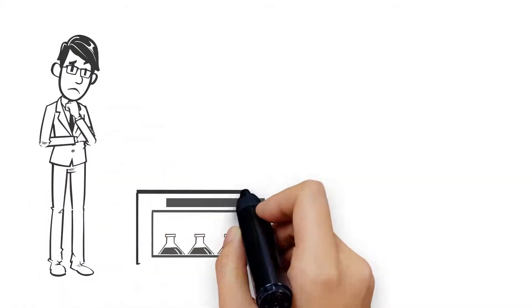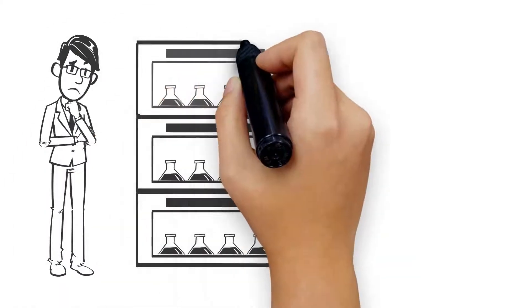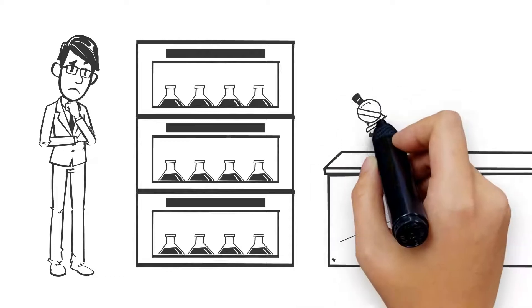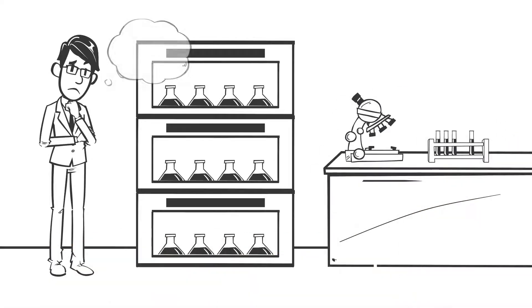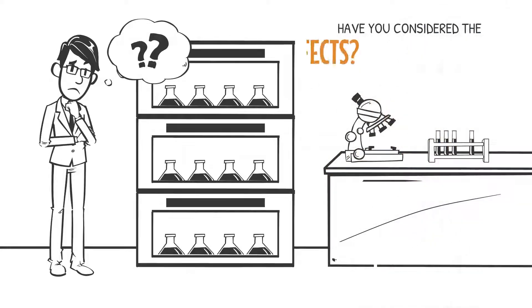Do you ever get lower biomass yields or cell viabilities than expected? You've prepared the shake flasks correctly and chosen the appropriate shaking throw and speed, but have you considered the evaporation effects?